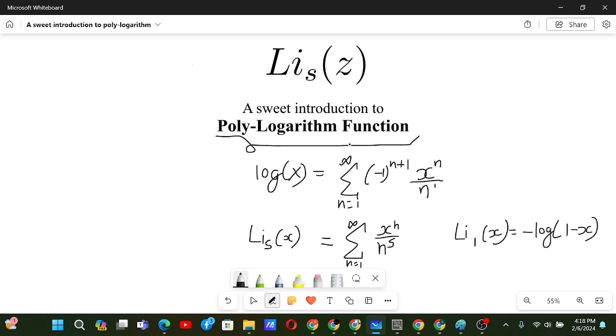So basically, polylogarithm function generalizes the logarithm function. And also an interesting observation is, if we try to let x as 1, we get sum from n equals 1 to infinity, 1 by n to the power s, which is just the Riemann zeta function of s. So this includes both logarithm function as well as the Riemann zeta function in it.